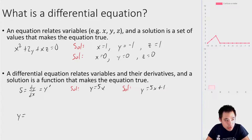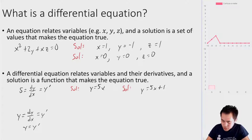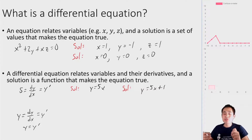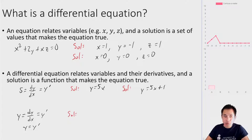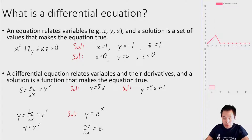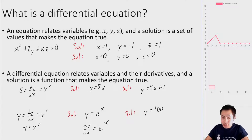A slightly more complicated example: y = dy/dx, meaning y equals y prime. The solution must be a function whose derivative equals itself. We know y = e^x works since dy/dx = e^x. But there are multiple solutions — y = C·e^x for any constant C, since dy/dx equals the same thing. So you don't just add a constant; you multiply by a constant.